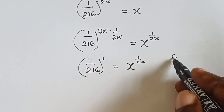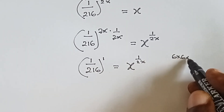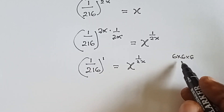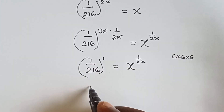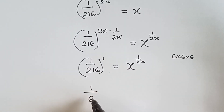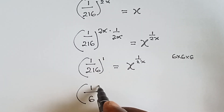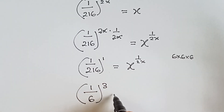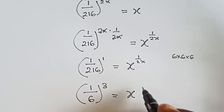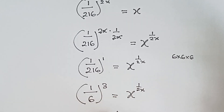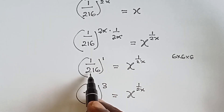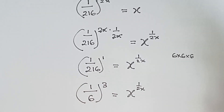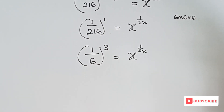Now 216 is a power of 6, because 6 times 6 times 6 gives us 216 — that is 6 in 3 places, so 6 cubed. We can rewrite this as 1 over 6 raised to the power 3, equals x raised to the power 1 over 2x. Because 1 cubed is 1, while 6 cubed gives us 216.